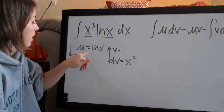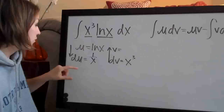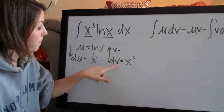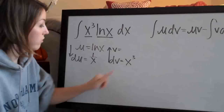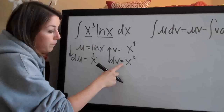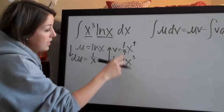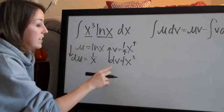Next, find du by taking the derivative of u, and find v by taking the antiderivative of dv. The derivative of natural log of x is 1 over x — that's a rule worth memorizing. For dv, we take the antiderivative of x cubed: add one to the exponent to get x to the fourth, then divide by the new exponent 4, giving us one-fourth x to the fourth. So now we have all four values: u, du, v, and dv.